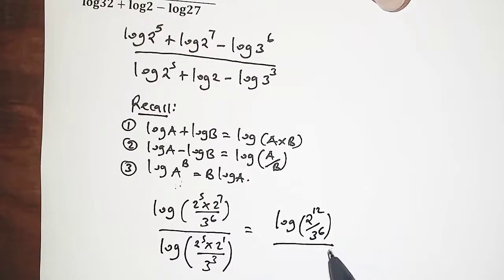On the denominator we also have logarithm of 2 power 5 times 2 power 1. That is 2 power 6 over 3 power 3.